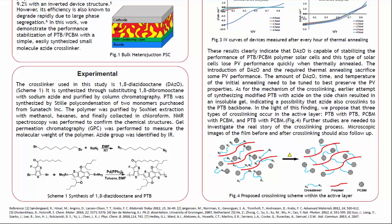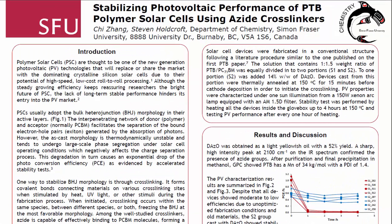NMR spectroscopy was performed to confirm the chemical structure. Gel permeation chromatography was performed to measure the molecular weight of the polymer. The azide group was identified by infrared spectroscopy. Solar cell devices were fabricated in a conventional structure following a literature procedure similar to the one published on the first PTB paper. The solution containing a 1 to 1.5 weight ratio of PTB-PC71BM was equally divided into two portions, and to one portion was added 14% weight ratio of diazidooctane. Devices cast from this portion were thermally annealed at 150°C for 15 minutes before cathode deposition in order to initiate the crosslinking.